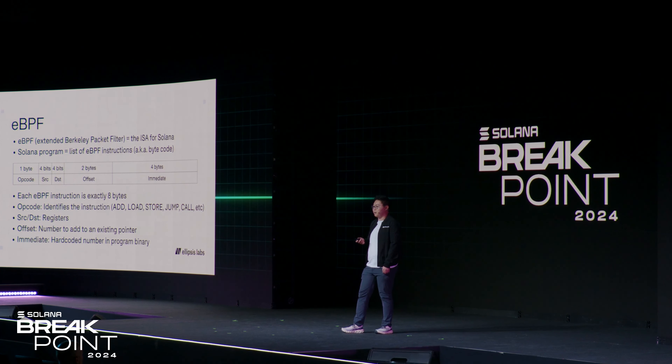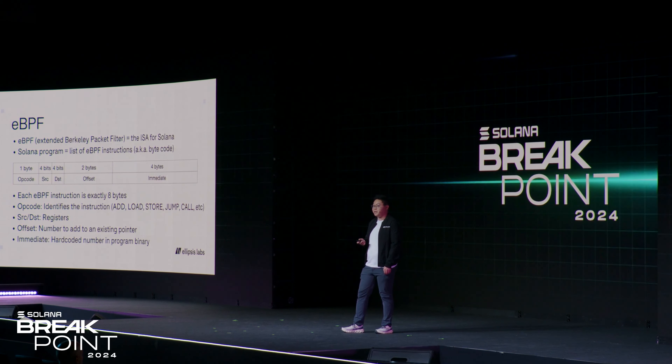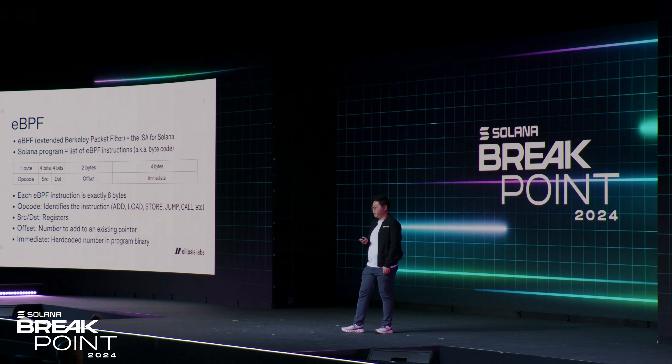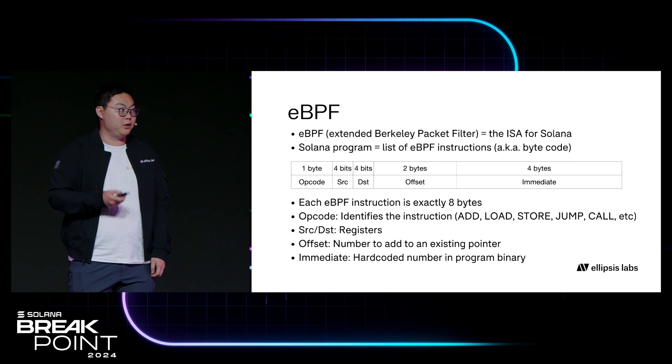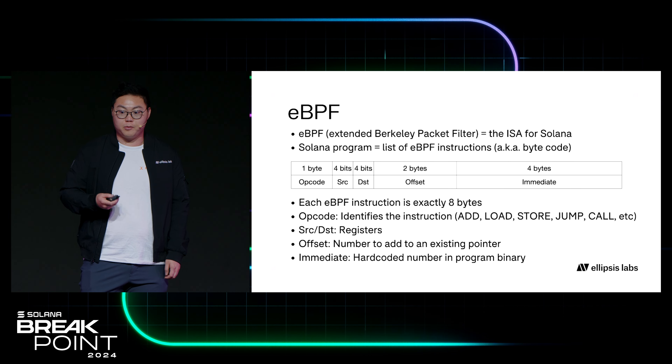Here we see a diagram of how each instruction is organized. It's made of exactly eight bytes. The first byte is the opcode, which corresponds to what the instruction actually does. The next byte contains indices for the registers — source and destination. A register is just a number that is closely accessible to the CPU. The last two things are the offset and immediate, which are hard-coded numbers that the CPU uses to perform computation.